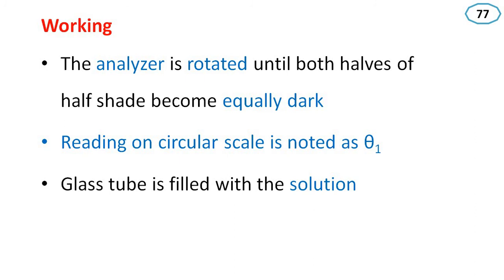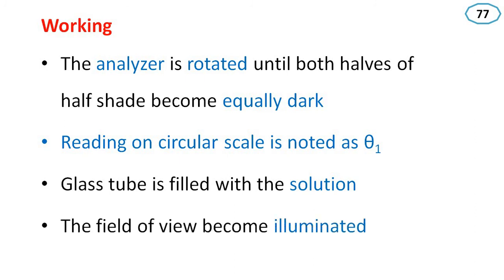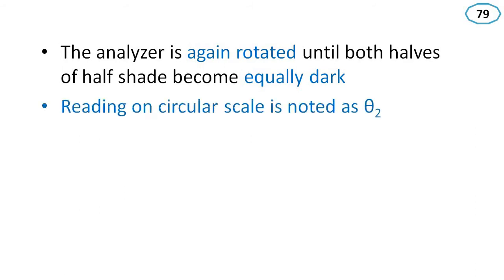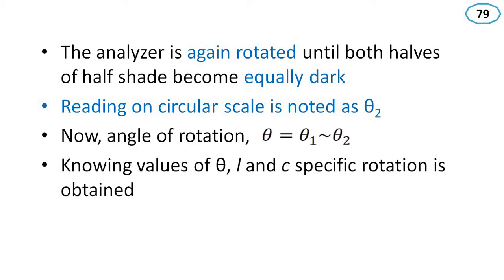Now the glass tube is filled with the solution. The field of view becomes illuminated. The analyzer is again rotated until both halves of the half-shade plate become equally dark. Initially without liquid theta 1 is noted, then with the solution the reading on the circular scale is noted as theta 2. The angle of rotation is given by theta equals theta 1 minus theta 2. Using theta, the length of the tube L, and the concentration of the solution C, the specific rotation is obtained.